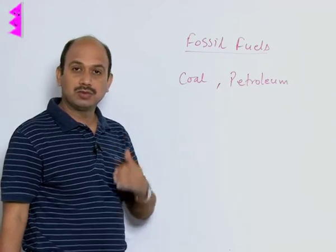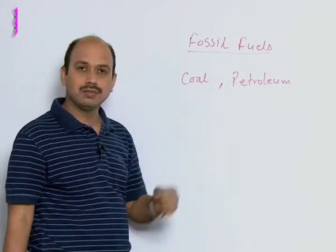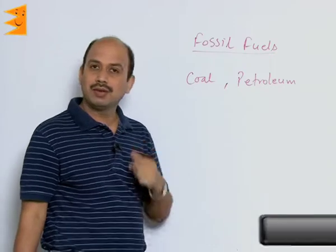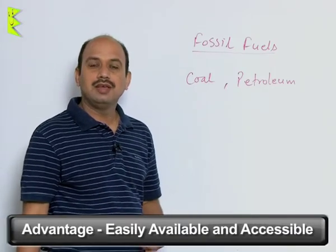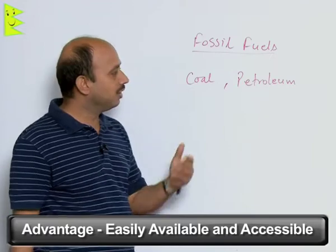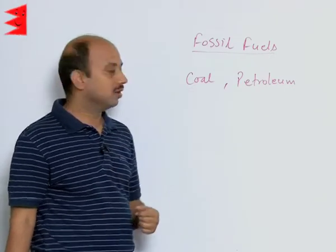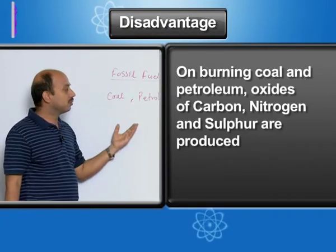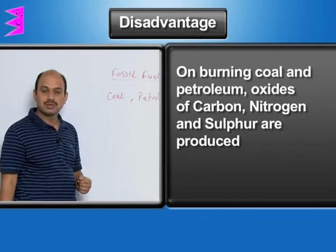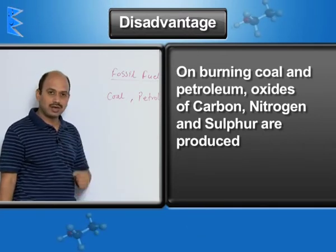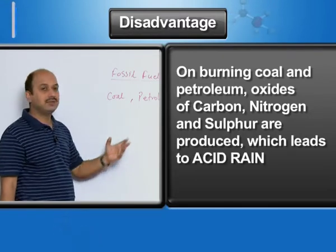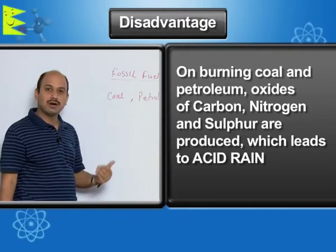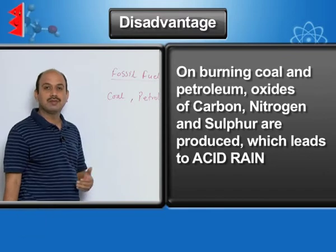We should use all these coal and petroleum judiciously. There are many disadvantages of using coal and petroleum. One advantage is they are easily available and accessible - everybody can use these fuels. But the main disadvantage is that whenever coal and petroleum are burned, many oxides of carbon, nitrogen, and sulphur are produced. These are all acidic oxides, and because of these, acid rain may occur, which is very harmful for crops and even for buildings.